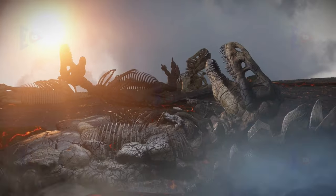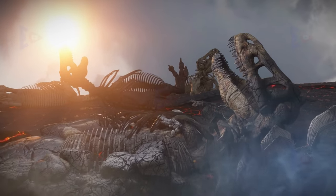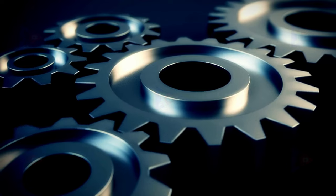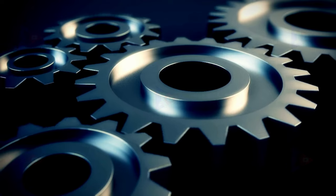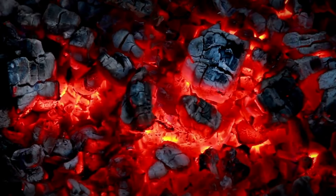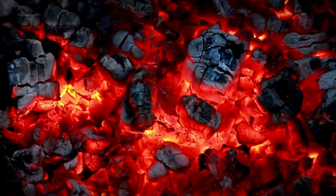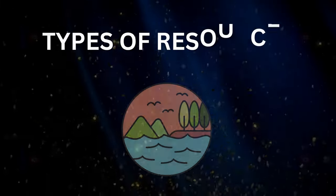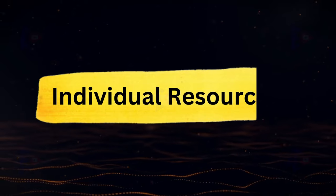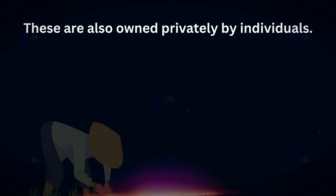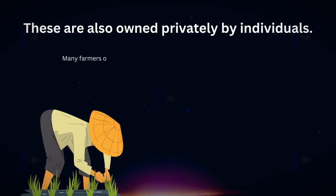Non-renewable resources take millions of years in their formation. Some resources like metals are recyclable, while others like fossil fuels cannot be recycled and get exhausted with their use. On the basis of ownership, individual resources are owned privately by individuals — for example, many farmers own land allotted to them by the government against payment of revenue.